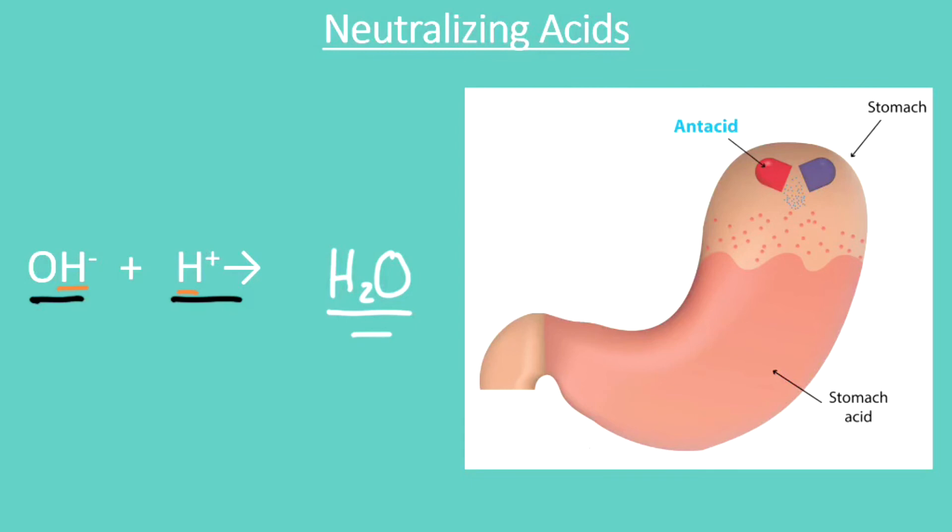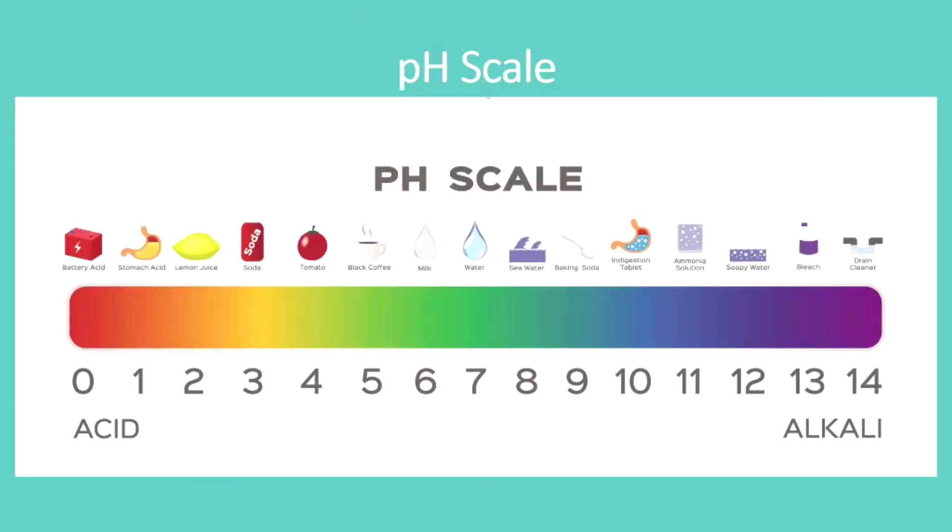Okay, now what we'll do is think about the pH scale. It turns out we measure how acidic or basic something is by the pH scale, and really low numbers are acidic. So on the left-hand side of our scale here, we have acids. On the right-hand side, we have bases, sometimes also called alkali, but these are just bases.